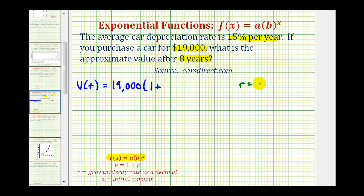Well, r is equal to negative 15% because it's decreasing at this rate per year, which is going to be equal to -0.15 as a decimal. So we'll have 1 + (-0.15) raised to the power of t.